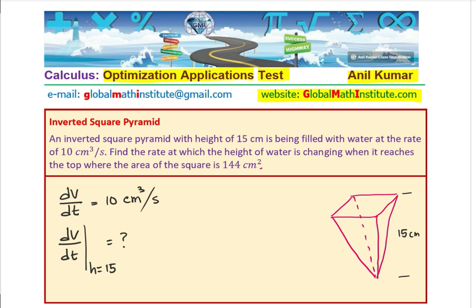The area of the square is given to us as 144 cm², not the width of the sides. So if S is the side, then S² = 144, which means the side is equal to the square root of 144, and that is 12 cm. So each side here is 12 cm.